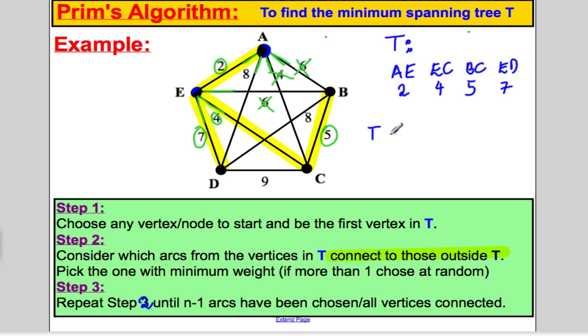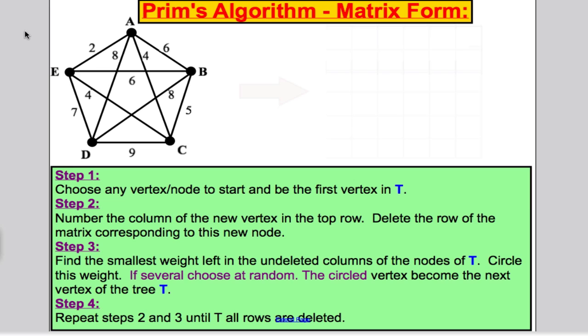So the total weight of the minimum spanning tree T is 2 and 4 is 6, add 5 is 11, add 7 is 18. That's as we got when we did it for Kruskal's algorithm as well. It's a nice, easy method to work through. It's particularly more useful when there are a larger number of vertices because we can convert it to a matrix form, which is what we're going to try next.